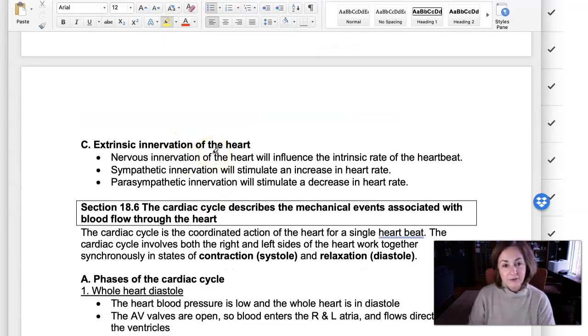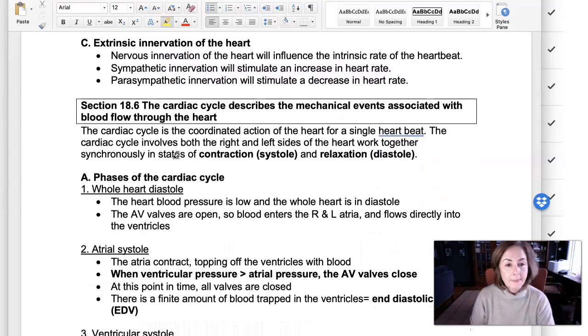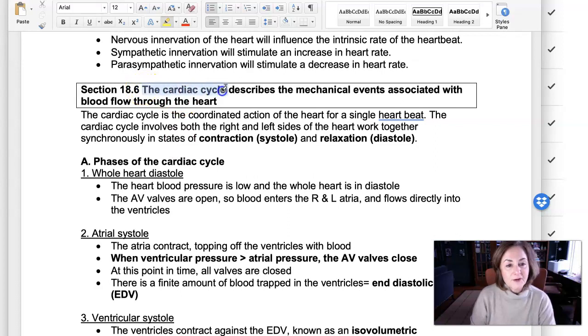Extrinsic innervation. So the heart will automatically beat on its own, even without nervous input. But what the nervous input does, how the nerves will speed up the heart or slow down the heart. And this is where the information all kind of comes together, the cardiac cycle.